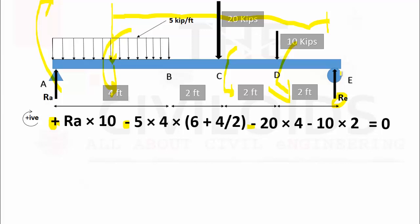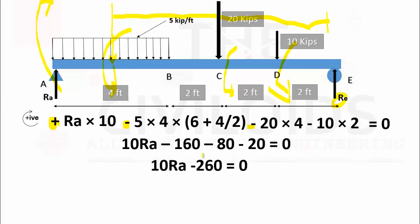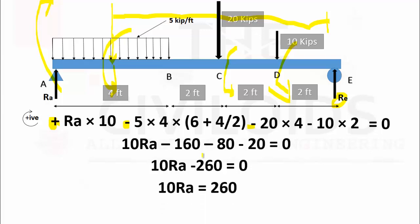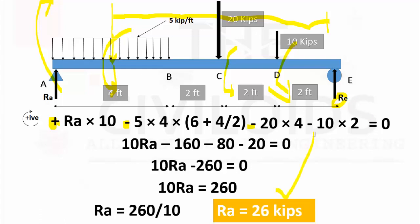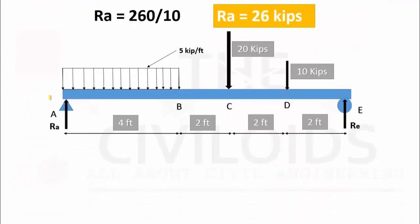By simplification we get: 10 RA − 160 − 80 − 20 = 0. By further simplifying: 10 RA − 260 = 0. Shifting −260 to the other side: 10 RA = 260. Dividing both sides by 10: RA = 260 ÷ 10 = 26 kips, which is the required result for reaction RA.